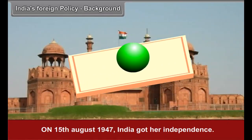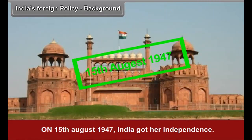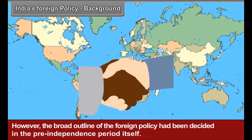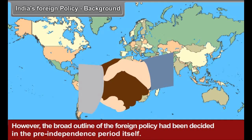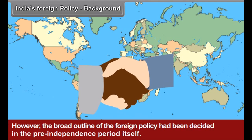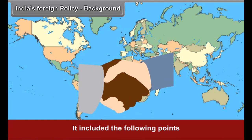The principles of international peace and understanding which emerged from India's freedom struggle have also influenced our foreign policy. On 15th August 1947, India got her independence. As an independent nation, it was necessary for India to decide her own foreign policy. However, the broad outline of the foreign policy had been decided in the pre-independence period itself.